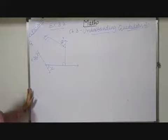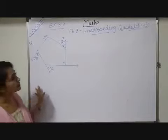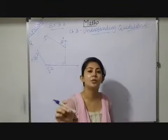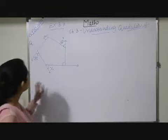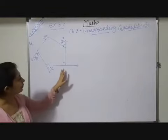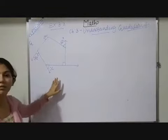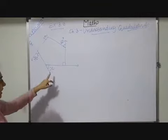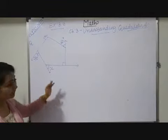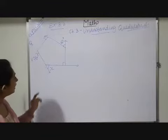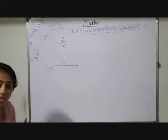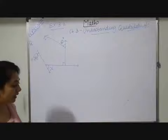Here I will discuss your second exercise of third chapter, that is Understanding Quadrilaterals. In this question, you have to observe this diagram and find out an unknown value x. You can observe that x is given on an outer part, which means it will be considered as an exterior angle.